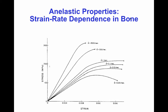Another anelastic property exhibited by bone and other tissues is a dependence of stress on strain rate. In an elastic material, stress depends only on strain, not on how fast the strain is changing. But in bone, as the strain rate increases, the stiffness increases and the strength changes. Over the range of strain rates shown, the Young's modulus of bone actually doubled. However, this range spans about six orders of magnitude, and under normal physiological conditions the strain rates bone experiences don't vary nearly that much. So the effects of strain rate on bone stiffness are not very great under normal conditions, but it is an anelastic property that cannot, by definition, be modeled by an elastic constitutive law.